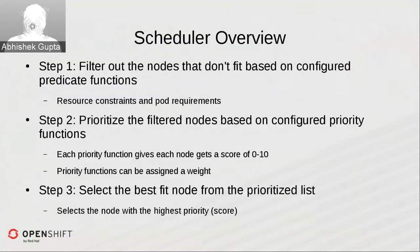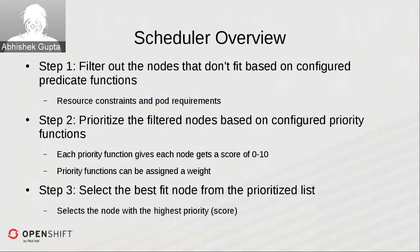In the second step, the filtered nodes are prioritized to find the best fit. Each priority function gives a score of 0 to 10 to each node, and you can assign a weight to a priority function. You can have multiple priority functions, and the weighted scores are aggregated. Finally, once you have your prioritized list, you select the node with the highest score, or if multiple nodes tie, one is selected at random.